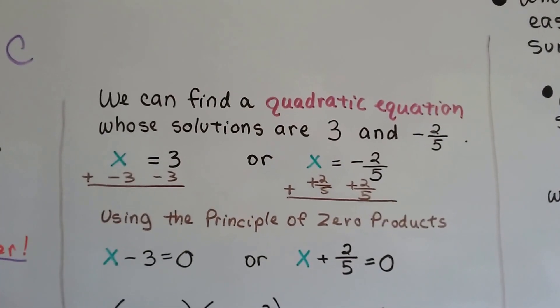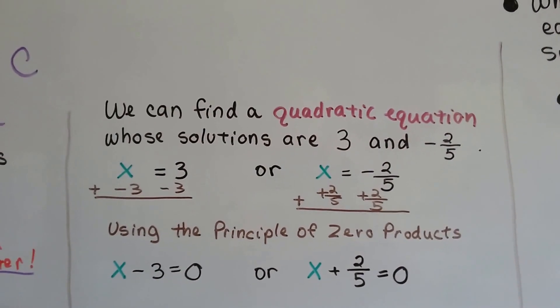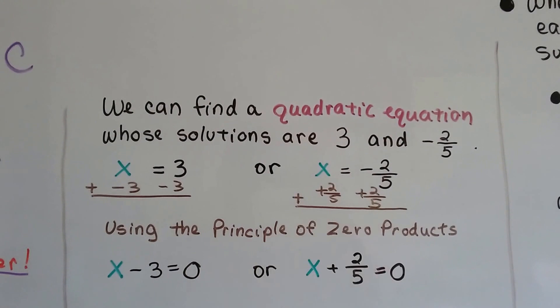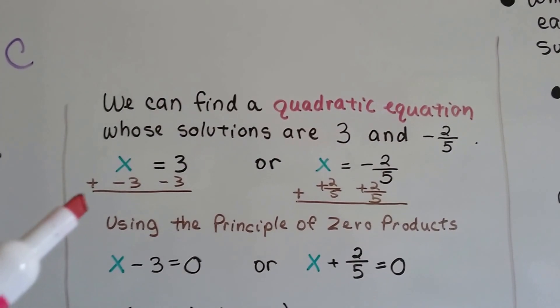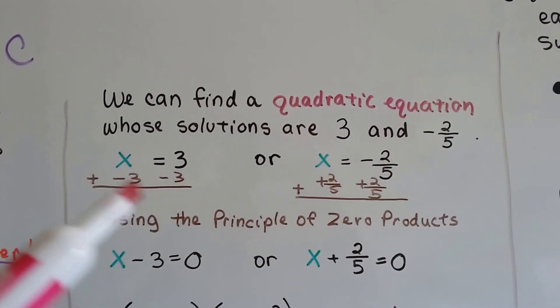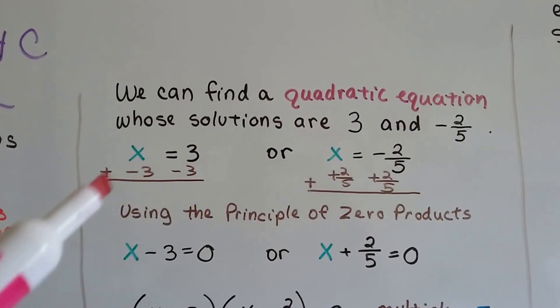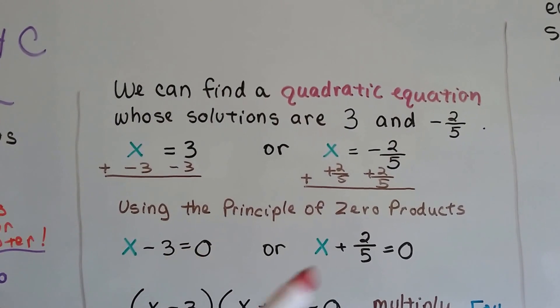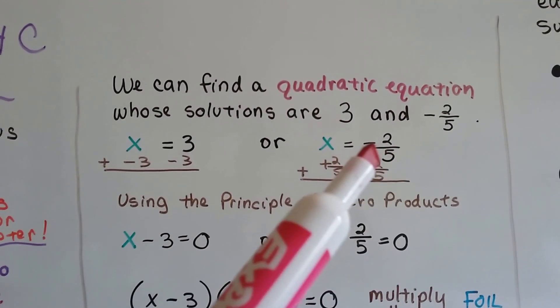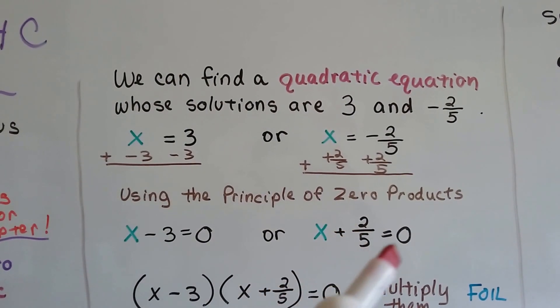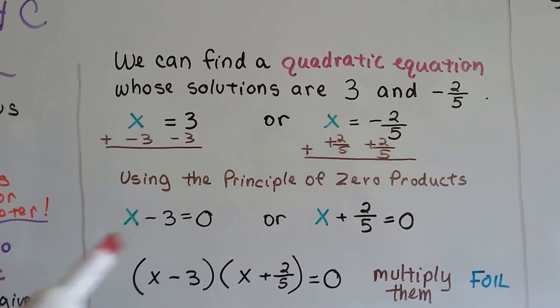We can find a quadratic equation whose solutions are 3 and -2/5. We set it as x = 3 or x = -2/5. Using additive inverses, we add -3 to each side, so we have x - 3 = 0. And because this is negative, we add 2/5 to each side, so we get x + 2/5 = 0, using the principle of zero products.